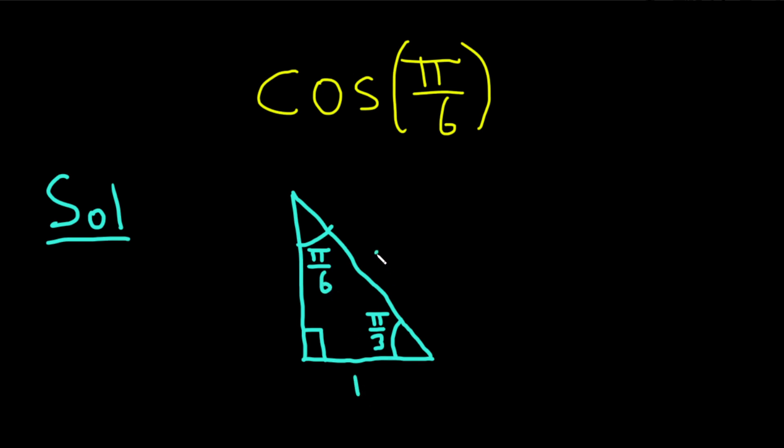The sides are 1, 2, and square root of 3. So that's the triangle, and with this triangle we can compute the cosine of pi over 6 using this memory trick: SOH-CAH-TOA.